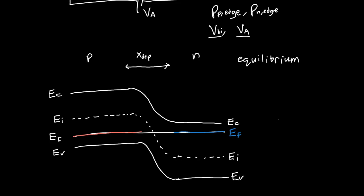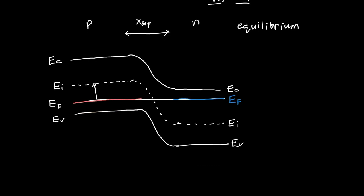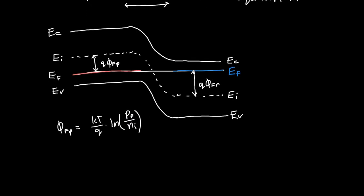So now we know, we know previously that the value, the difference between this intrinsic energy and this Fermi energy, Q φFp, we know that φFp is just equal to KT over Q times the natural log of whatever the majority carrier concentration in here is. So let's call this P on the P-side, divided by the intrinsic carrier concentration. And similarly, we know that Q φFn, this value, φFn is just equal to KT over Q.